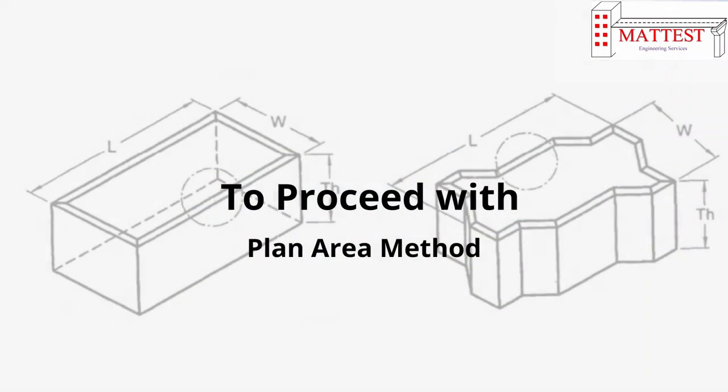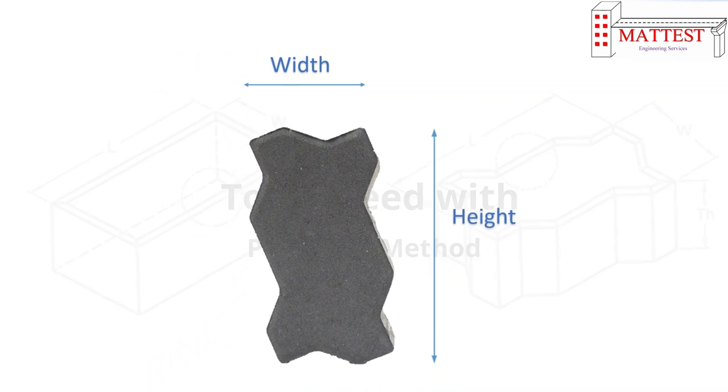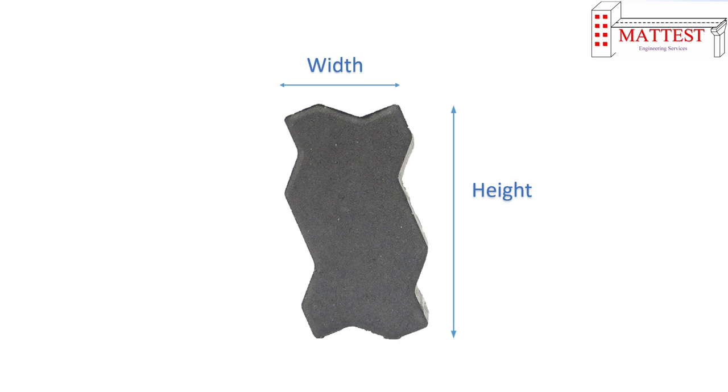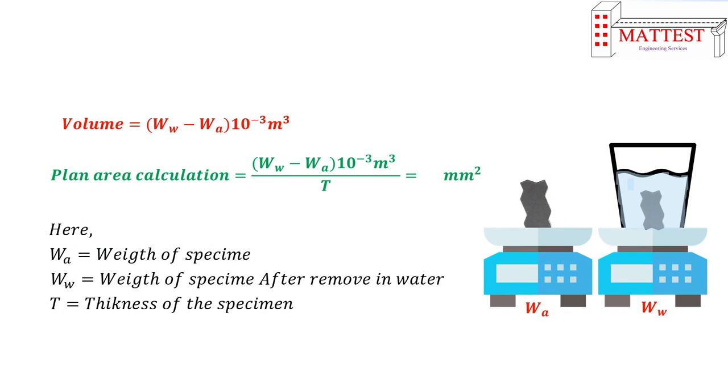After weighing, calculate the plan area. As per IAS code 15658-2021, the height, width, and thickness of the specimen are measured to calculate area. The plan area is calculated by: weight of specimen after removal from water minus weight of specimen in water times 10 to the minus 3, divided by thickness of specimen. The answer will be in mm squared.